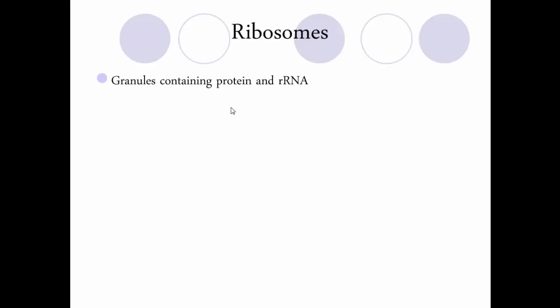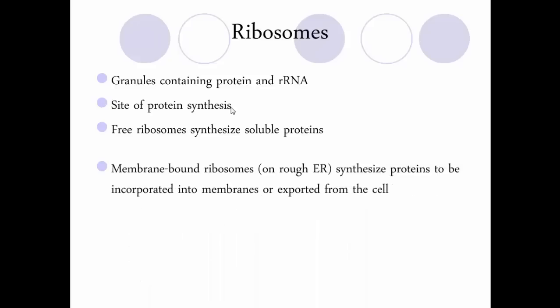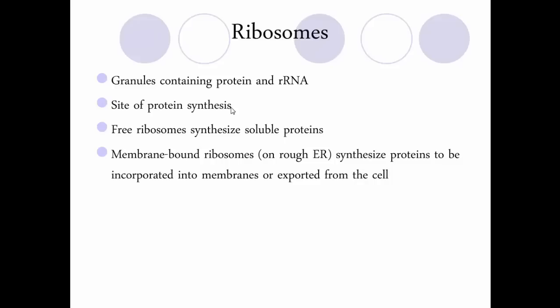Ribosomes are granules — non-membranous, made of ribosomal RNA and protein. They are where protein synthesis happens — where all proteins are made within the cell. There are two types: free ribosomes, which float around and synthesize soluble proteins that can be dissolved in water; and membrane-bound ribosomes, which are attached to the endoplasmic reticulum forming the rough endoplasmic reticulum, and synthesize proteins incorporated into membranes or exported from the cell.